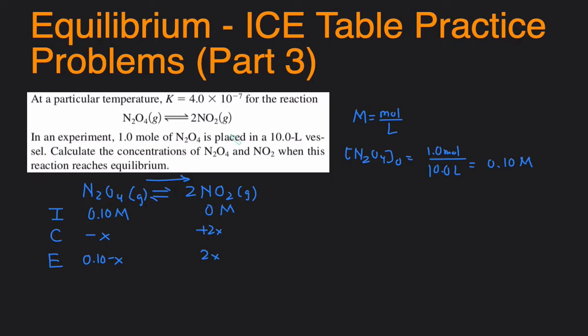Then we can set up the K expression. So Kc will equal the concentration of NO2 squared divided by the concentration of N2O4.